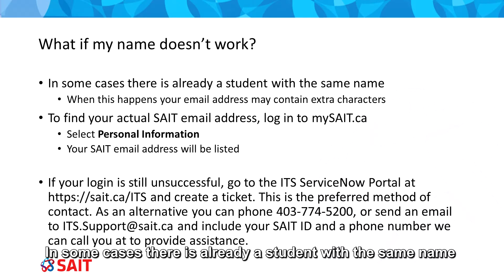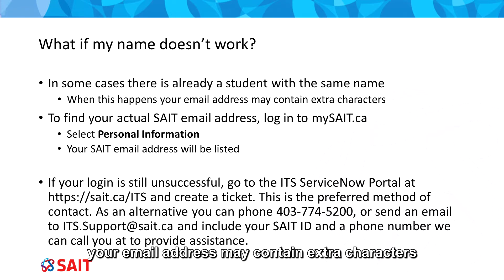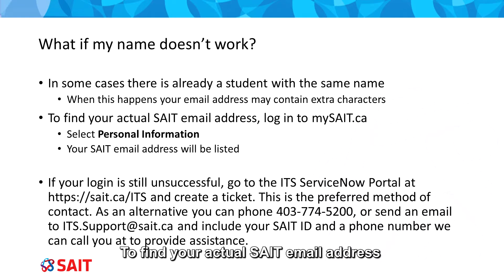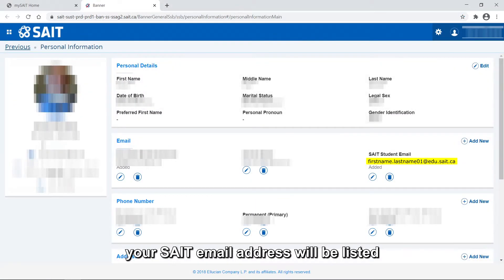In some cases, there is already a student with the same name. When this happens, your email address may contain extra characters. To find your actual SAIT email address, log in to mysait.ca and select Personal Information. Your SAIT email address will be listed.